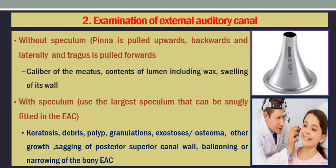After examination of the external aspect, we proceed to examination of the external canal, which is performed first without speculum and then with speculum. The advantage of the speculum examination is to find out the caliber of the external meatus, and to know when the patient has a furuncle or when there is pain — if you pass the speculum when the patient has a furuncle, it will cause pain. The pinna is pulled upwards, backwards, and laterally while the tragus is pulled forward so the canal can be widened. You examine the caliber of the meatus and can see contents of the lumen including wax, discharge, foreign body, or debris.